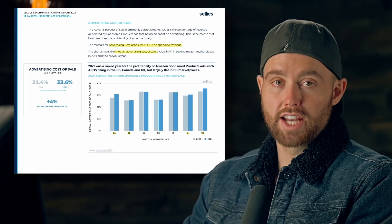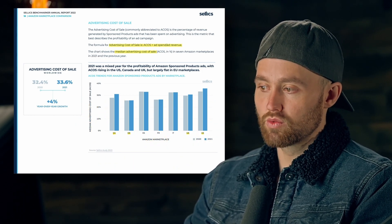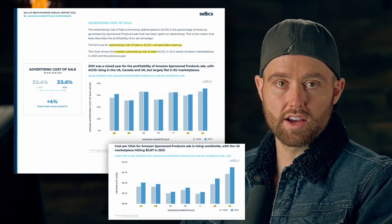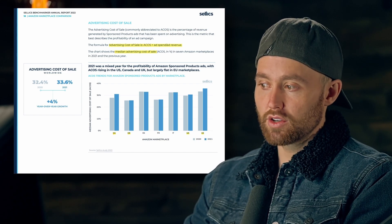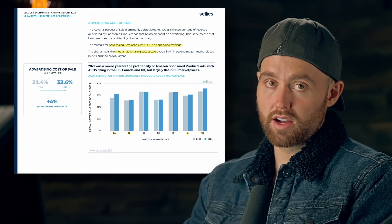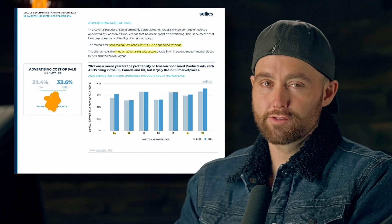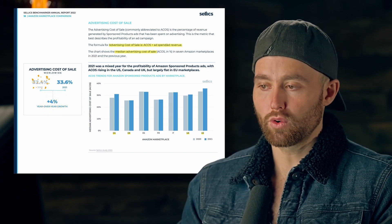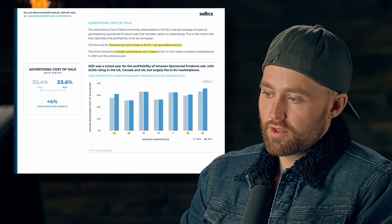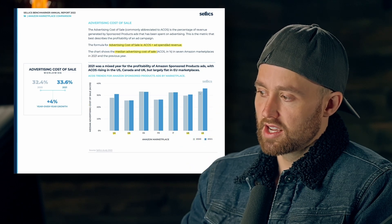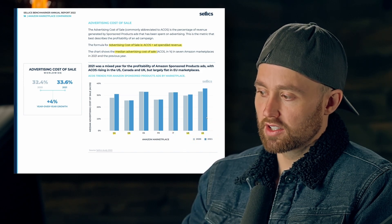Looking at ACoS across marketplaces — Canada, Germany, UK, and US — although the US has those higher cost per clicks, the ACoS is more in line with the other marketplaces. Worldwide, we saw an increase from 2020 to 2021 of just four percent — it used to be 32.4 percent, it's now 33.6 percent. The North American marketplaces saw the biggest increase, while Europe remained more static.